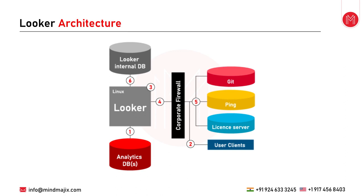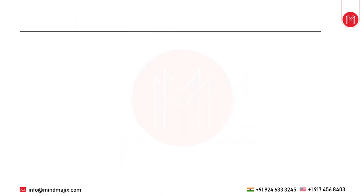The building blocks or components of Looker architecture include the Looker internal database and the Linux server, as well as an analytics database. There is a corporate firewall separating the internal components from the external side, which includes a Git ping license server and the user clients.